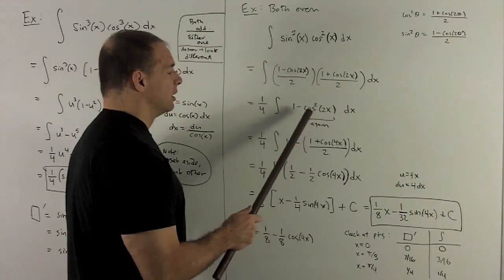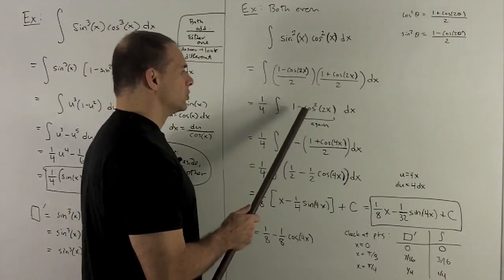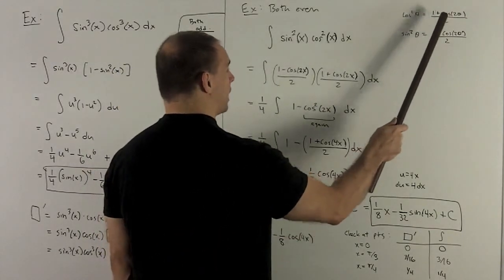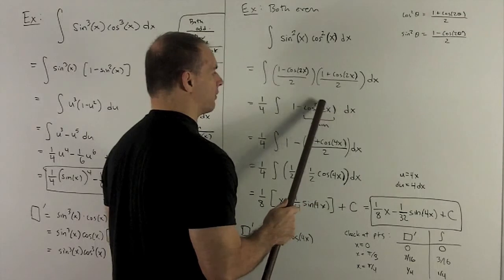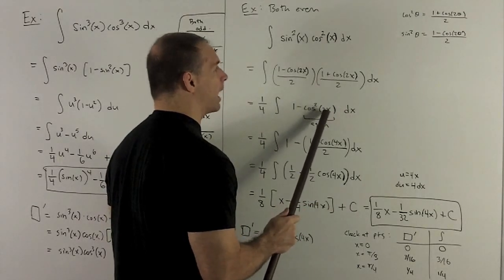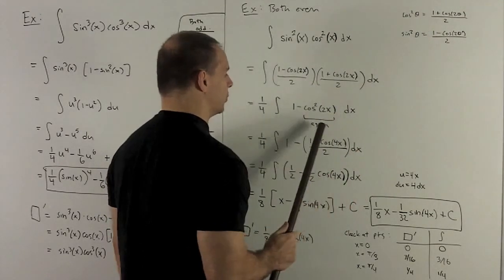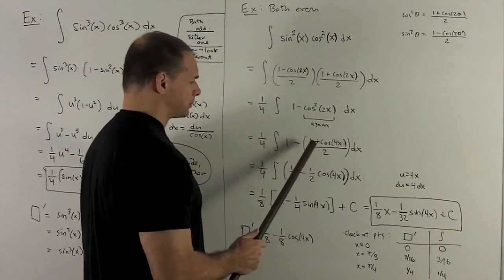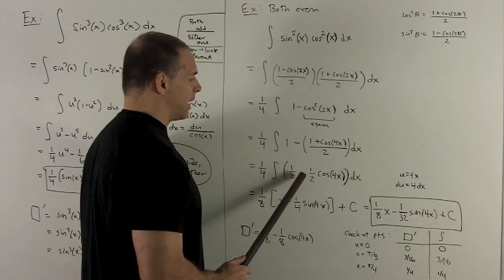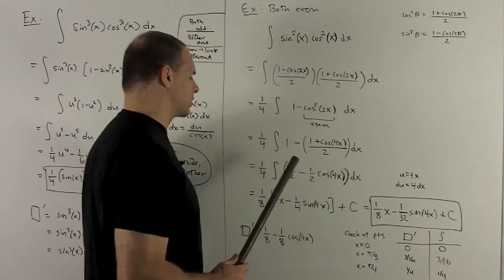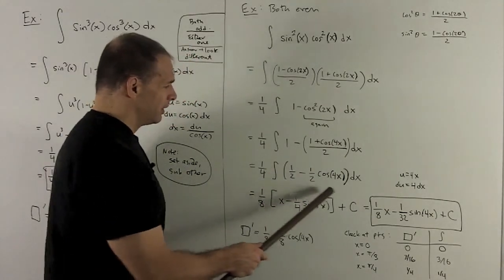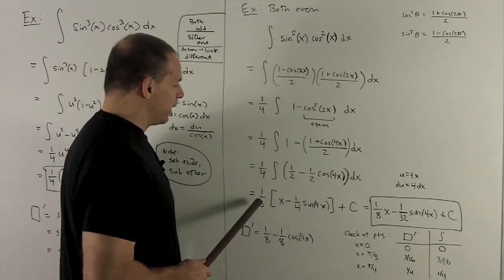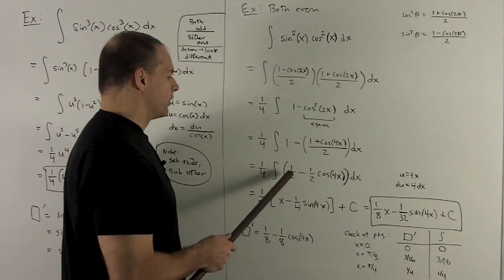So we can apply it again to this. So cosine squared of 2x is going to equal 1 plus cosine of twice whatever is in the box. So that turns into a 4x. And then that's going to be over 2 also. So we wind up with this. I collapse. So it's going to give me a 1 half minus a half cosine 4x. This I can do the antiderivative of. The 1 halves I'm going to pull out to make this a 1 eighth. So we have a 1 here. Antiderivative of 1 is x.